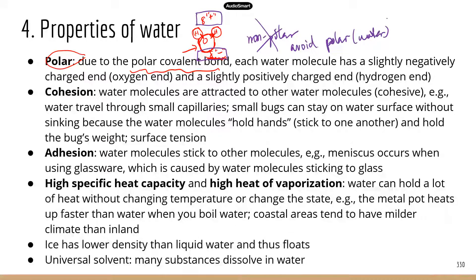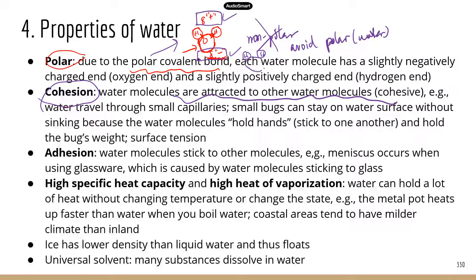Water molecules are also cohesive. Cohesion describes how similar molecules stick with one another. Water molecules are attracted to other water molecules because all water molecules have a positive and a negative end. The negative end of one water molecule is going to be attracted to the positive end of another water molecule, making water molecules a little bit sticky to one another.